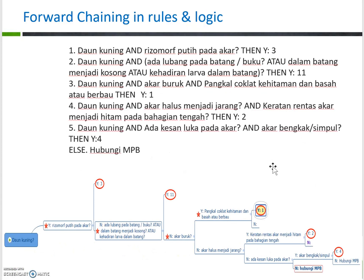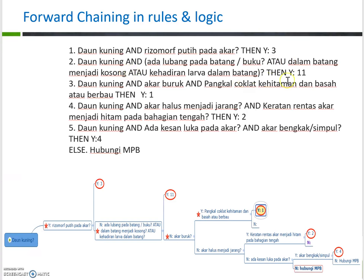I hope you can understand how to read based on a decision tree — how to decide whether it's yes or no depending on the facts at that time. A decision tree can always be interchanged with rules. For example, from this decision tree: the first rule is if 'daun kuning' and 'rhizomorph putih pada akar' then 'white tree' — meaning if both are true, then white tree is true. The second rule: if 'daun kuning' is true and 'rhizomorph putih pada akar' is not true, then we ask about 'ada lubang pada batang atau buku' or 'dalam batang menjadi kosong' or 'kehadiran laba dalam batang', then it's Y11.